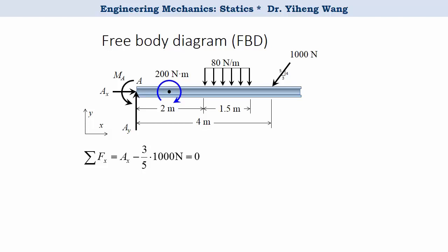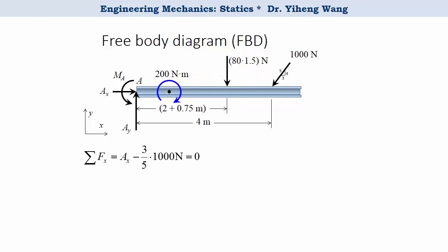The next equation is for the resultant force along the y direction. Before writing it, I need to use a concentrated force to replace the distributed load. Since this is a uniform distribution with a load intensity of 80 N per meter for a length of 1.5 meters, the resultant force is 80 multiplied by 1.5, positioned at the center of the load. Therefore, the resultant force along the y axis equals Ay minus 80 times 1.5, minus the vertical component of the 1000 N force, and it equals zero.